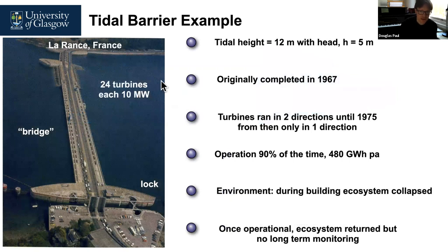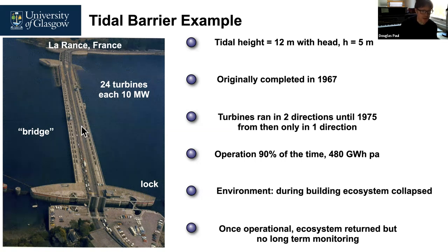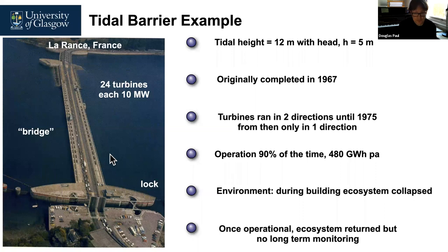Here's an example in France, built in 1967 at La Rance. The original scheme had 24 turbines, each rated at a maximum of 10 megawatts. You can see the barrage with turbines running underneath, a road built over the top, some bridges, and locks so that boats can still pass up and down the river — because one issue is that the barrage will block the ability to use the river. In this case, the tidal height is 12 metres and the available head on either side of the barrage is five metres.